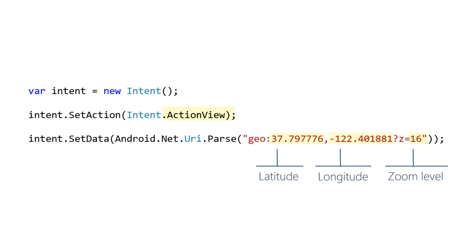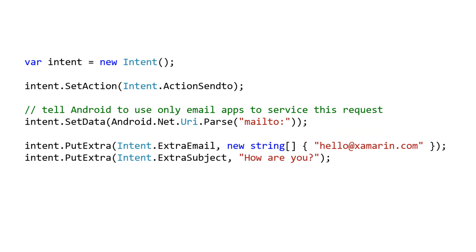Use an implicit intent with ActionSendTo to send an email. To send an email you need to create the intent with action, data, and extras. The action is ActionSendTo because you want to send a message.